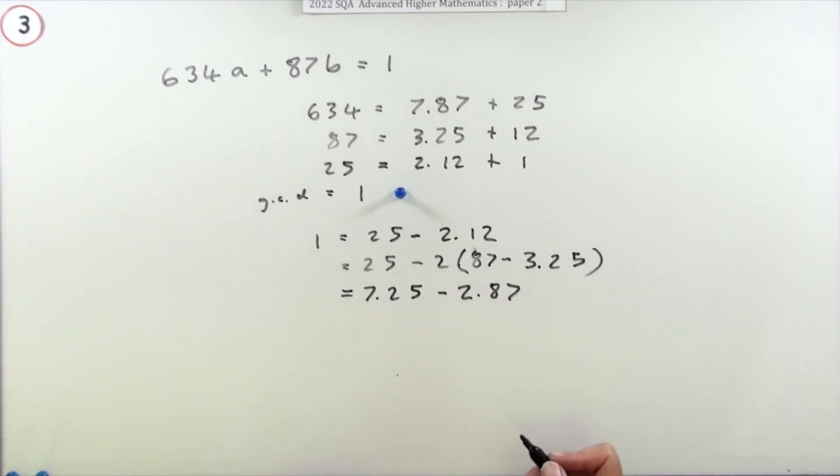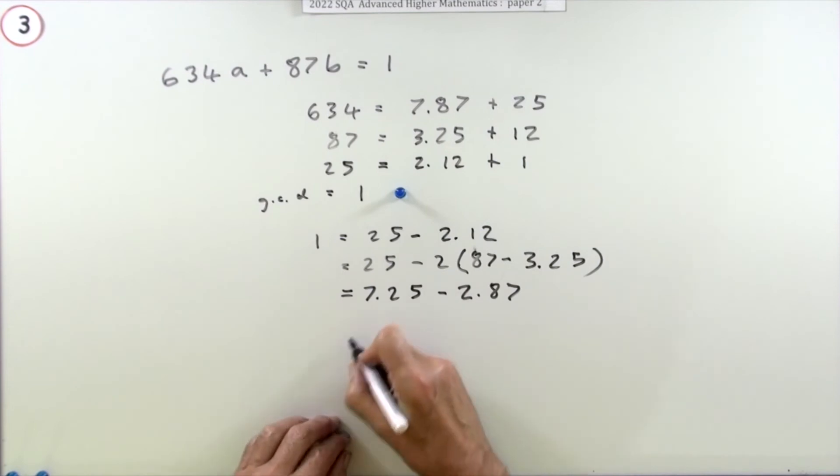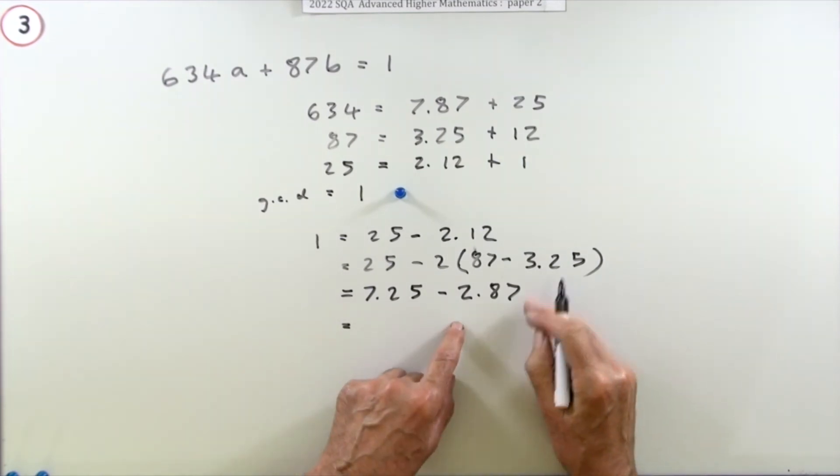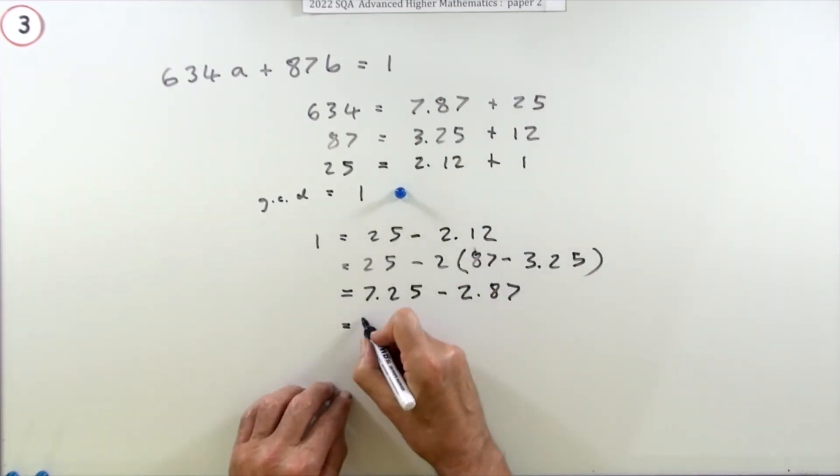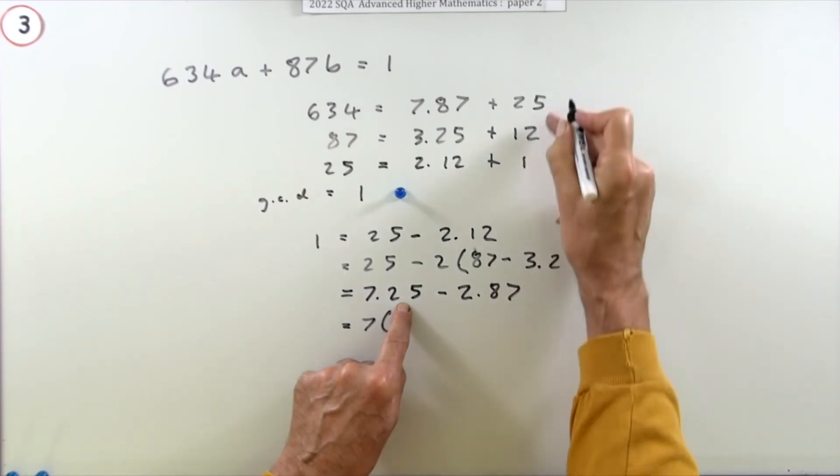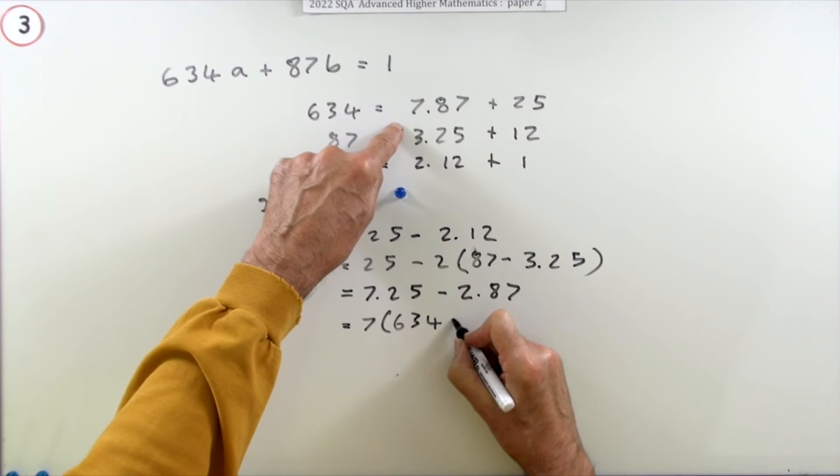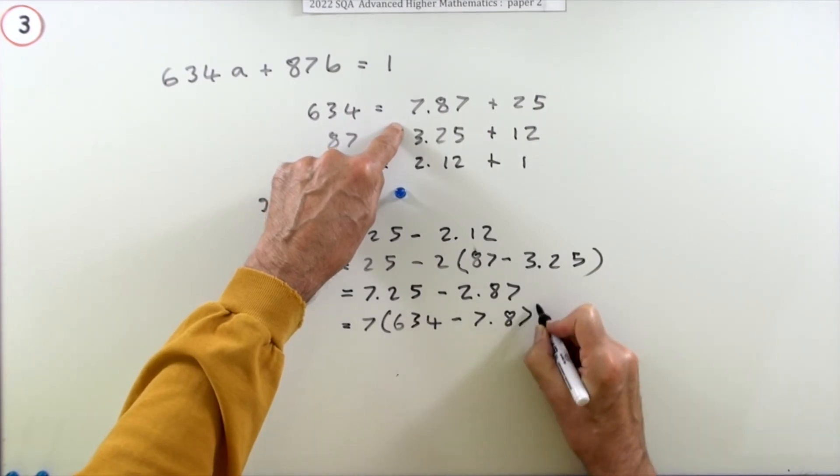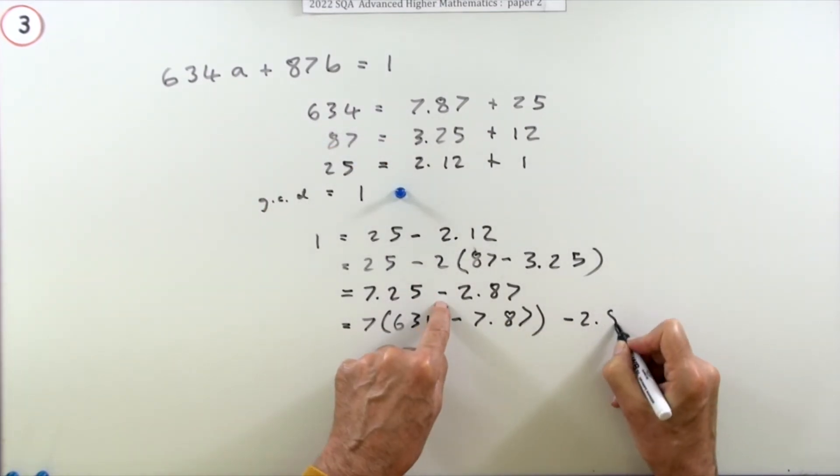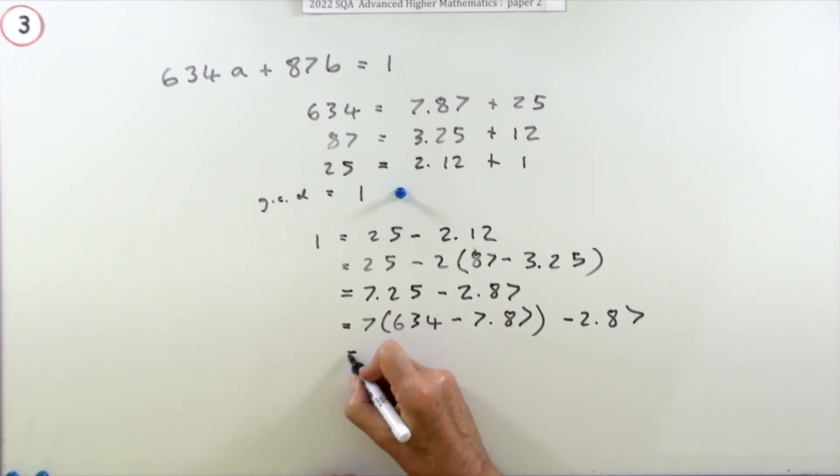Loads of arithmetic just for one mark. Now I can step back up to that 25. So instead of 7 lots of 25, I can say that's 634 minus 7 lots of 87 minus the 2 lots of 87 I had already.